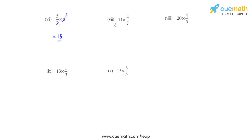Coming to the seventh bit, we have 11 times 4 over 7. On multiplying we get the product as 44 divided by 7. On division we get the quotient as 6 and the remainder as 2. So the mixed fraction for this will be 6 and 2 sevenths.